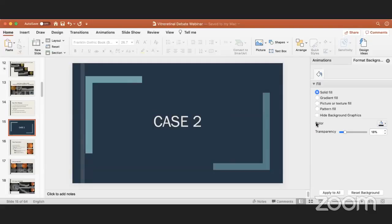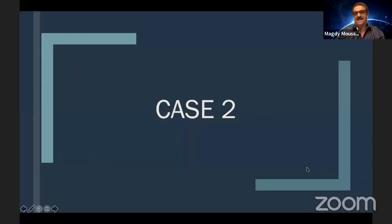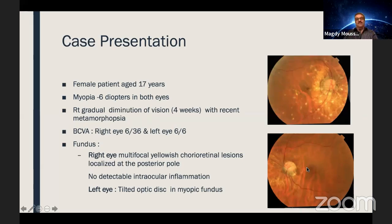Moving to the second case. This is a 17-year-old female presenting with right eye diminution of vision of 6/36. She's myopic — minus six diopters in both eyes, no astigmatism. She had right gradual diminution of vision four weeks ago with recent metamorphopsia a couple of days ago, which is the annoying symptom that brought her in. The right eye shows multiple white points — multifocal lesions at the posterior pole extending to the equator. Myopic changes are well seen. The left fundus shows tilted optic disc and myopic tigroid fundus.